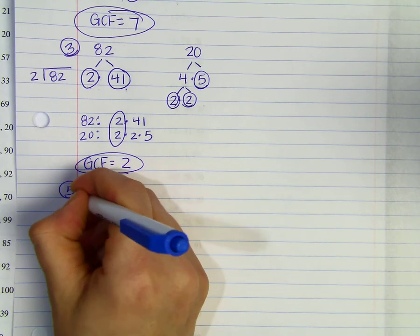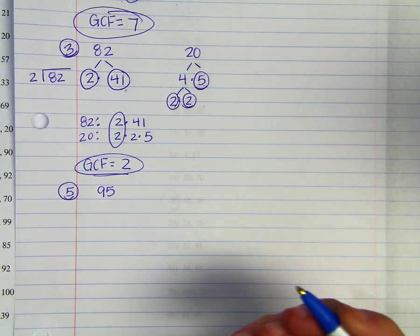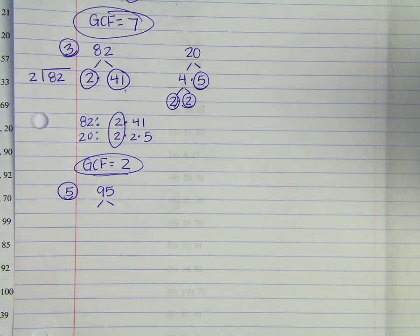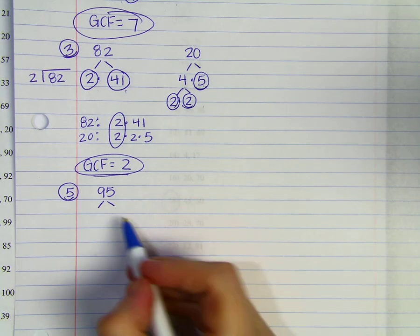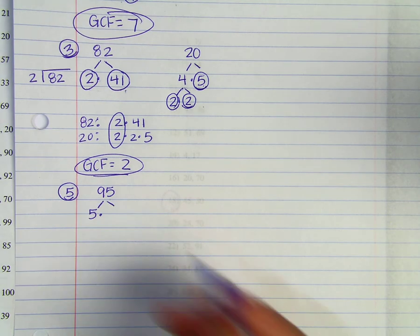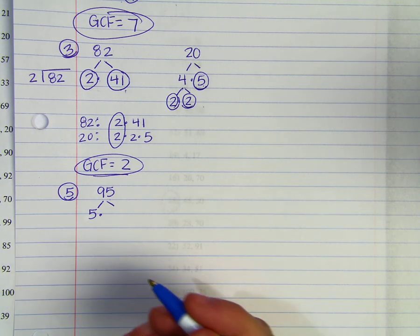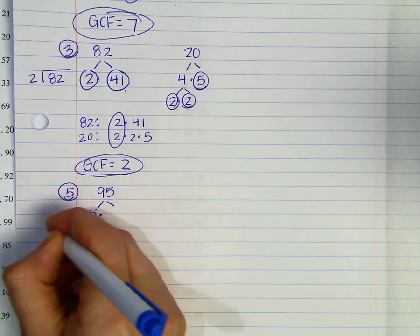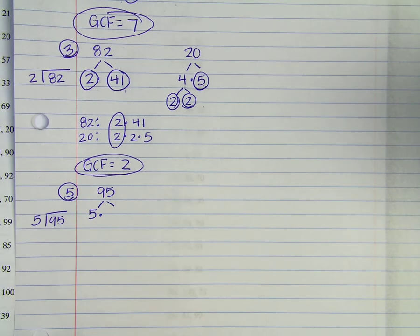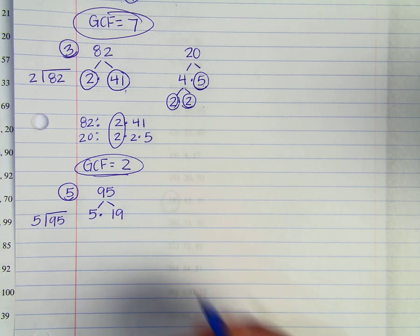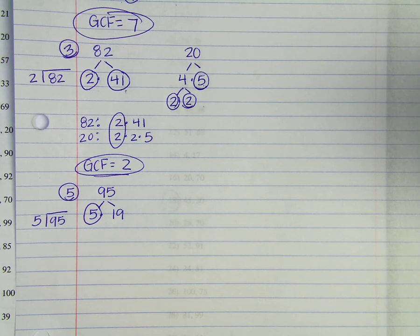Let's try number 5. You're asked to find the GCF of 95 and 57. Start off with your factor tree. 95 is not prime — it ends in 5, so I know it's divisible by 5. If you're unsure how many times 5 goes into 95, divide 95 by 5 in the margin. We find that to be 19. We already talked about 5 being a prime number. 19 is also a prime number because its only factors are 1 and 19.